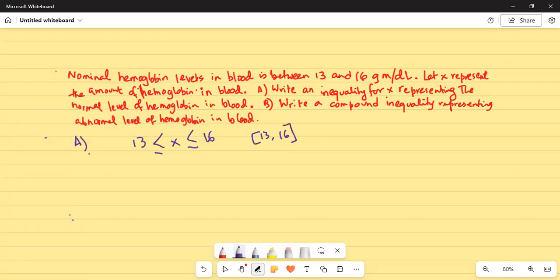Part B. Abnormal level of hemoglobin. It is X less than 13 or X greater than 16.